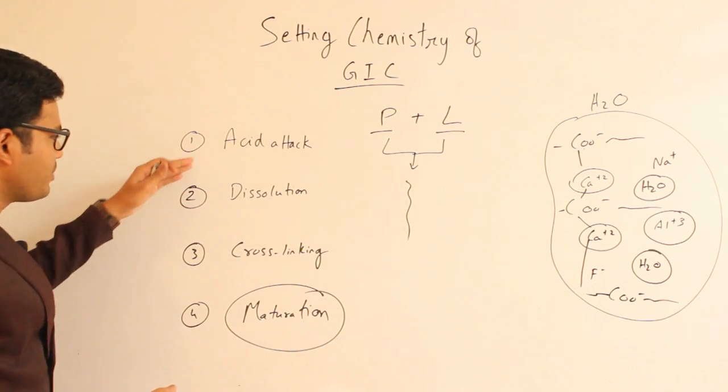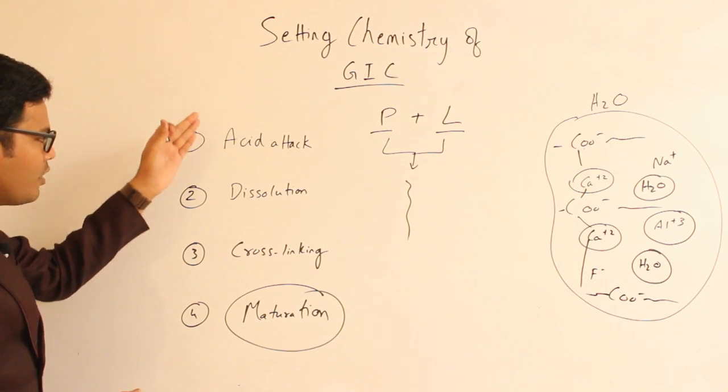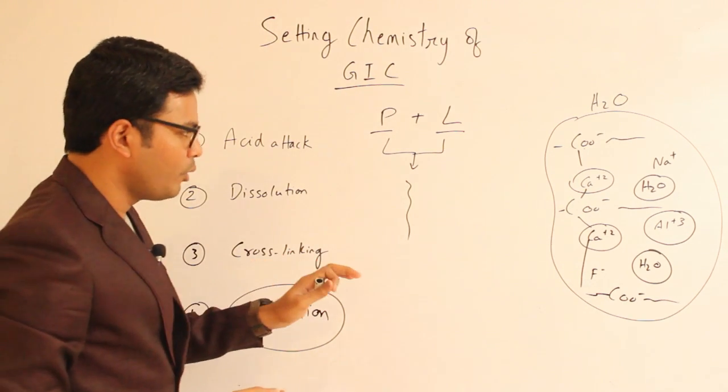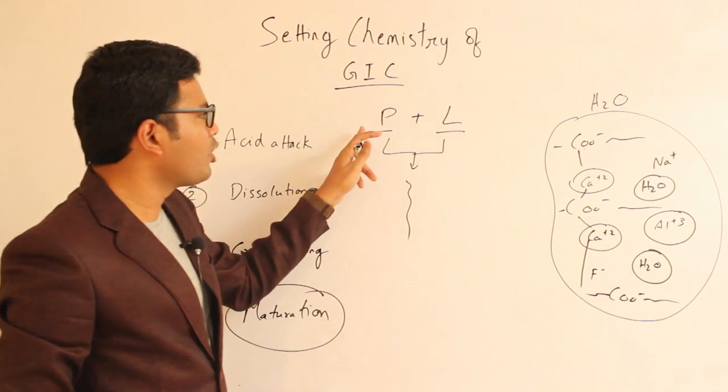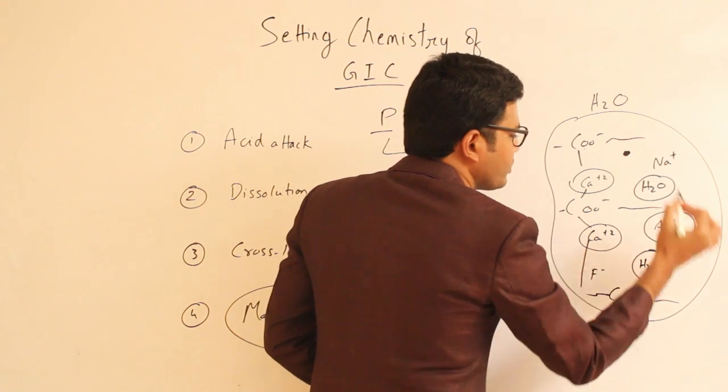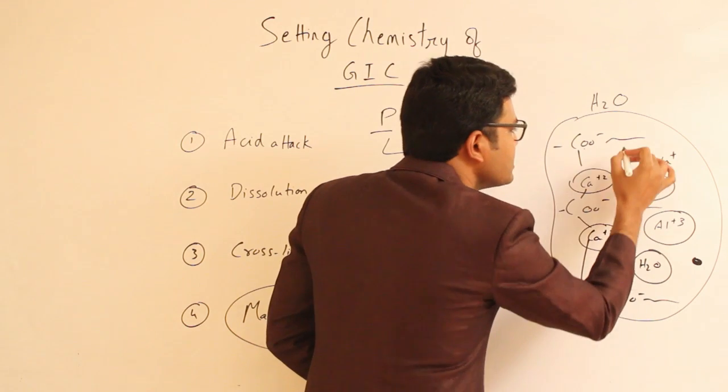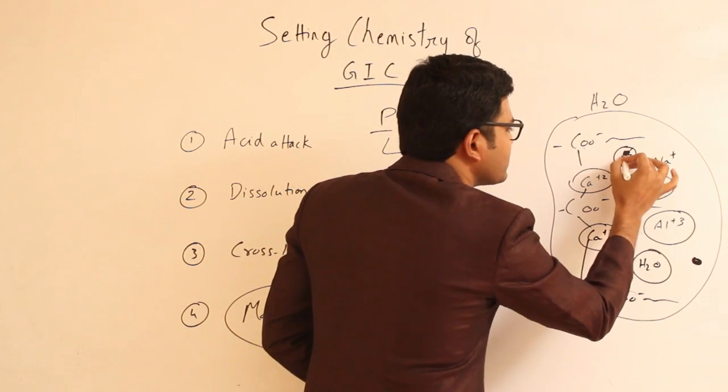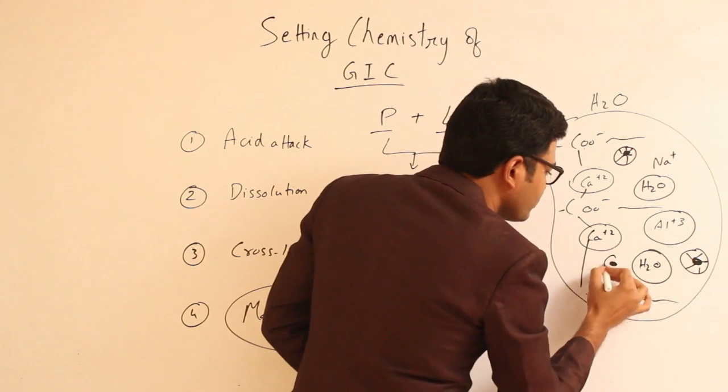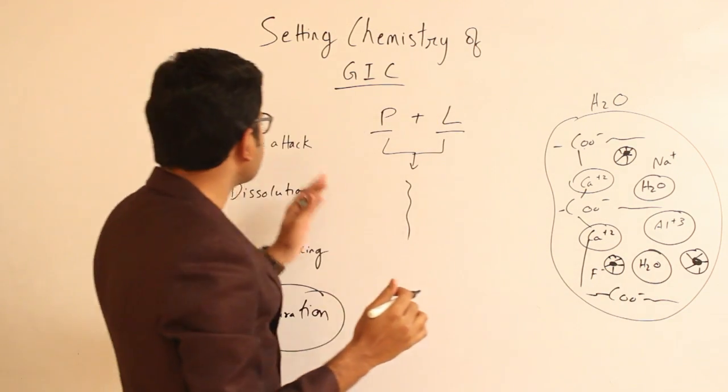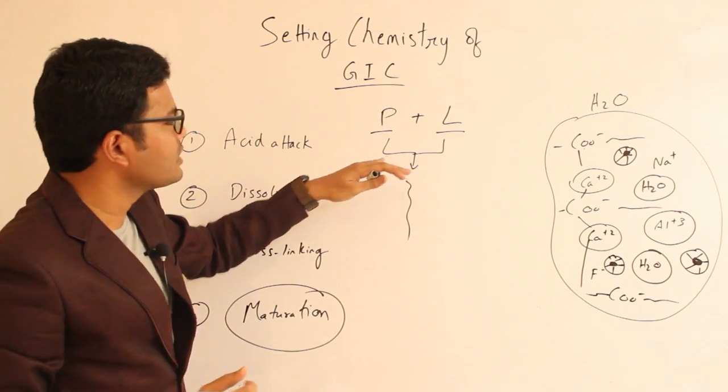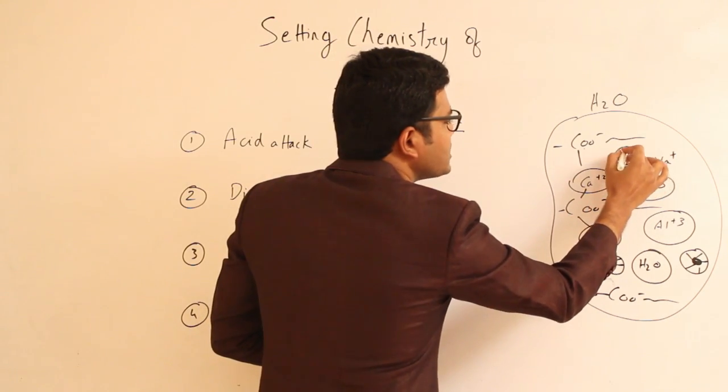This is in brief the chain of reactions happening once we mix powder with liquid. Another important aspect is that not all powder particles participate in the reaction. There are few unreacted powder particles surrounded by silica sheath. This silica sheath is formed during the acid attack phase wherein the ions are leached into the reaction.